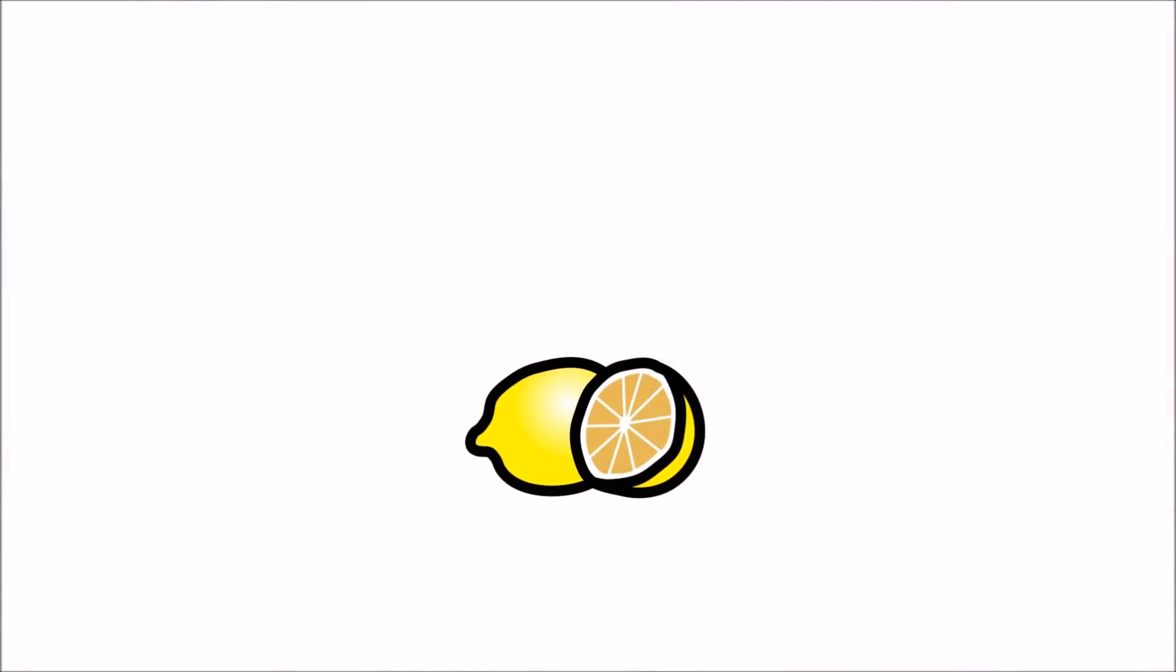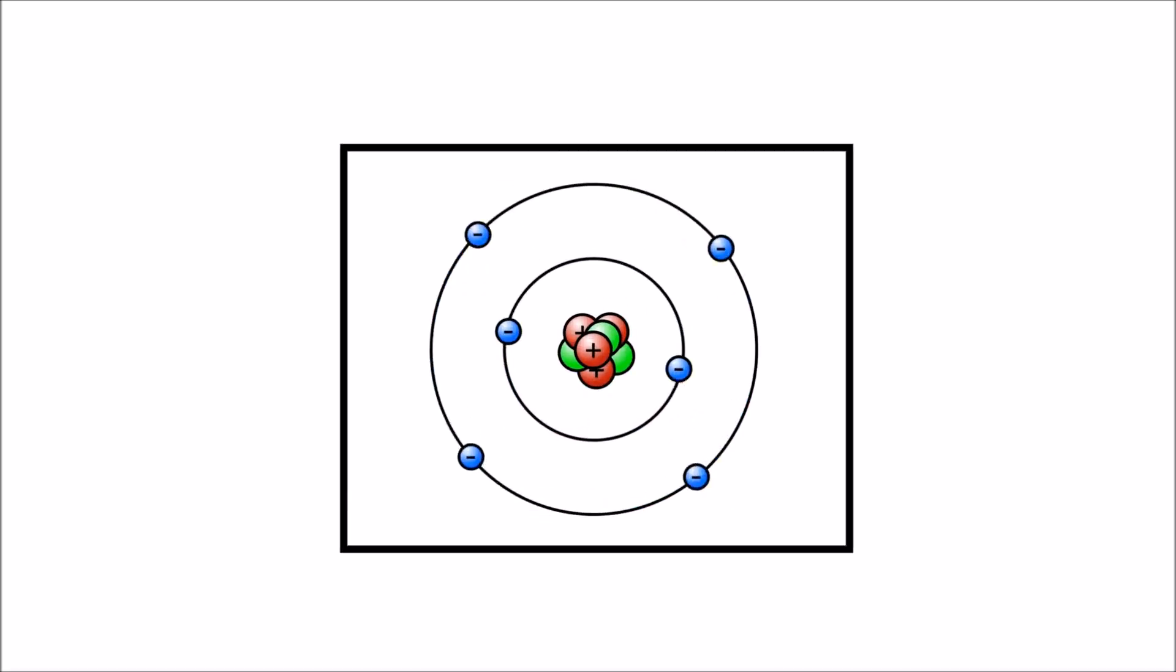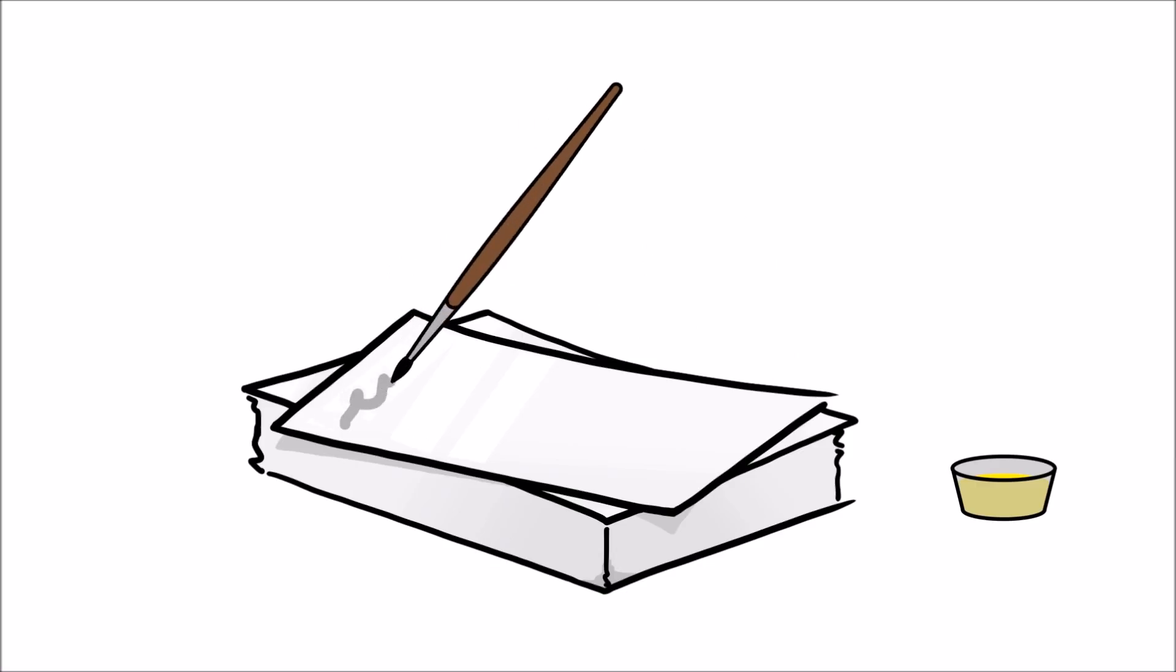This invisible ink experiment uses lemon juice. Lemon juice contains carbon molecules. And when lemon juice is painted onto paper, it absorbs into the paper's fibers.